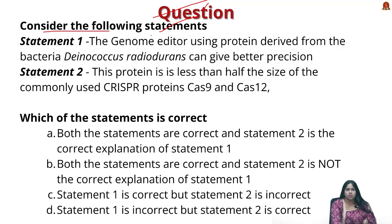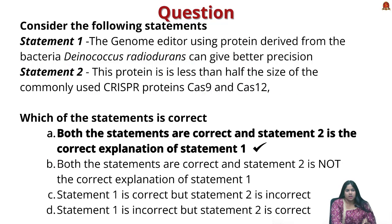Next prelims practice question on the genome editor: Consider the following — Statement 1: The genome editor using protein derived from bacteria Deinococcus radiodurans can give better precision. Statement 2: The protein is less than half the size of the commonly used CRISPR proteins Cas9 and Cas12. The answer is both statements are correct, and statement two is the correct explanation of statement one.